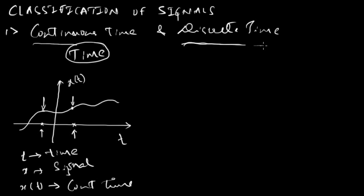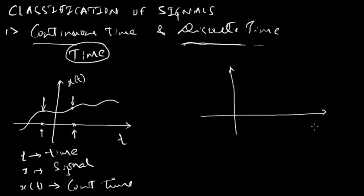Now let us try to understand the discrete time signal. For that, consider this diagram. This time the x-axis is represented using the time variable n, and this is our signal x of n, and this is how it looks.